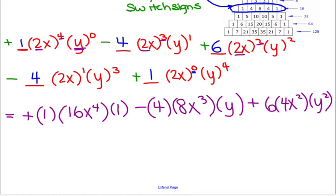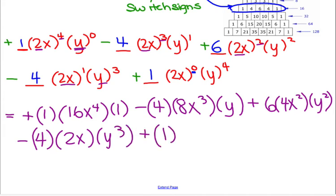I'll head down here. Minus four times 2x to the first. This is 2x. And then y cubed. Plus one. Anything raised to the zero power, so that whole thing raised to the zero power is one. And then y to the fourth.